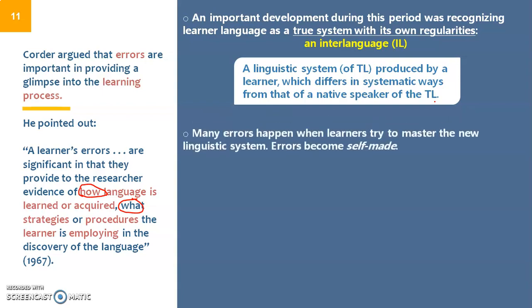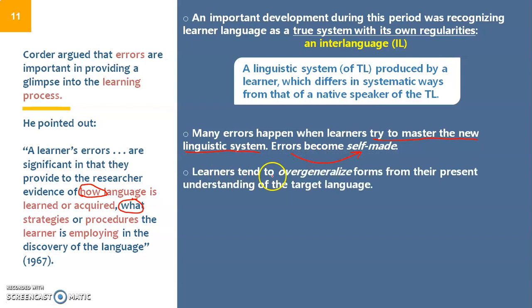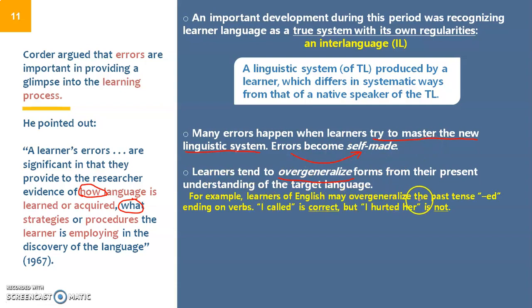Therefore, many errors happen when learners try to master—you are learning new rules and learning new language, you try to master it but still you would make certain errors. Therefore the errors are self-made. Learners tend to also overgeneralize forms from their present understanding of the target language, and you know from your own experience here. I'm explaining what error analysis talked about, what their hypotheses were. So example: learners of English may overgeneralize the past tense -ed. You know this. Instead, for example, we use -ed for the past form at the end of the verb. However, learners might overgeneralize by using the -ed form for irregular verbs, like saying 'I hurted her' or 'I goed there yesterday.'